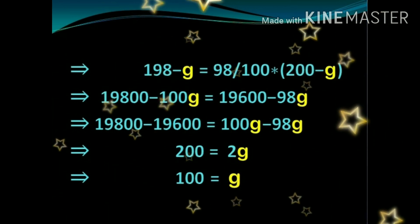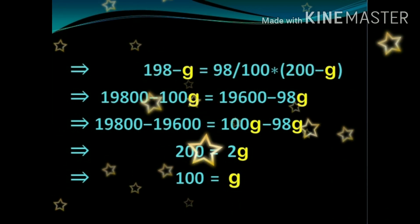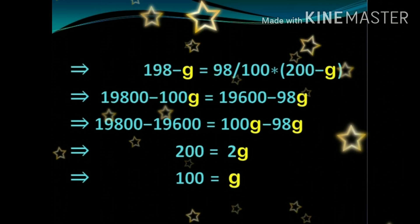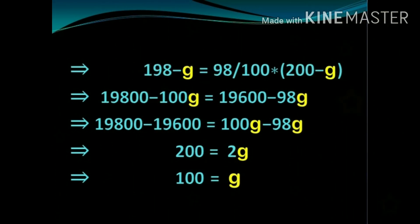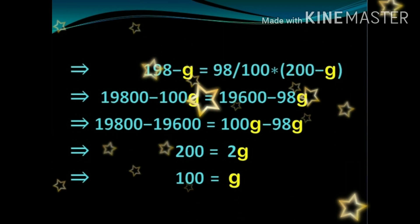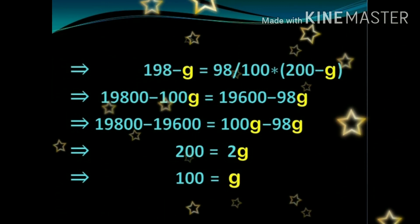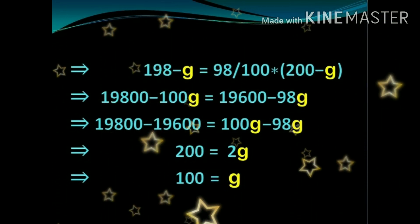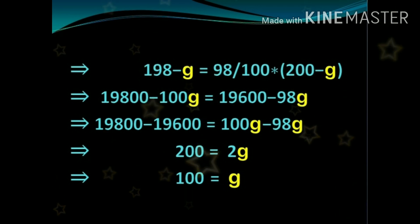That implies 198 − G = (98/100) × (200 − G). Multiplying both sides by 100 gives 19,800 − 100G. Multiplying 98 by (200 − G) gives 19,600 − 98G. Bringing 19,600 to the left and 100G to the right, we get 200 = 2G, so G = 100.